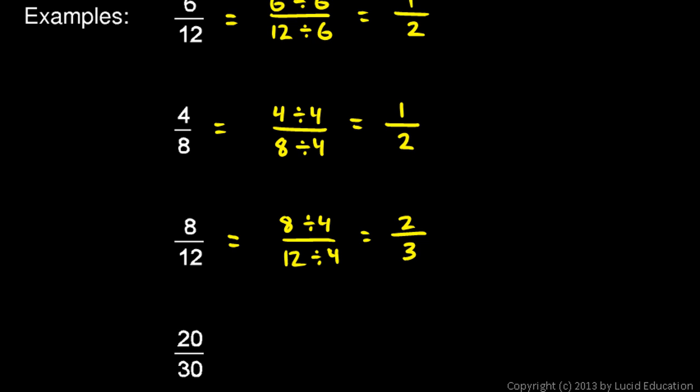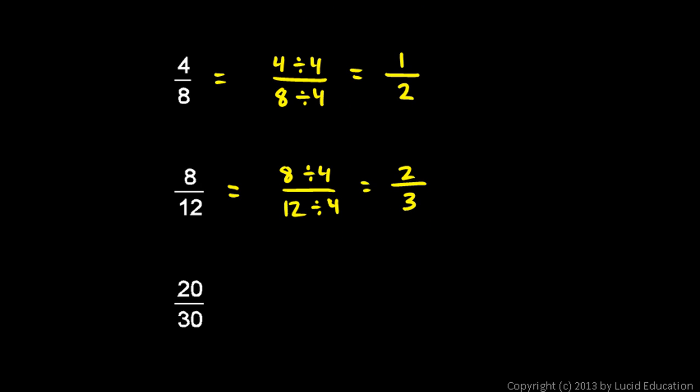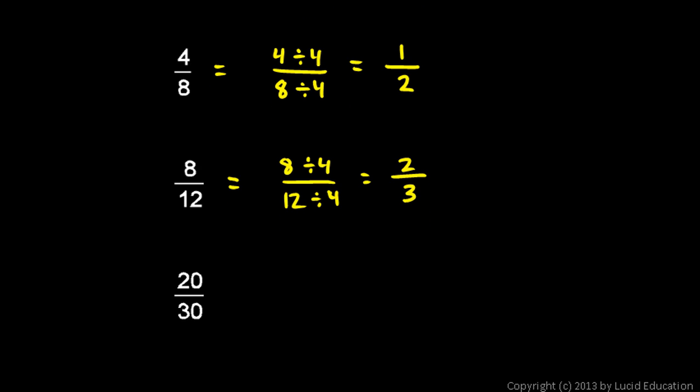One more example here: 20 over 30. What stands out is the 0—20 ends in a 0, and 30 ends in a 0. Both of those numbers are divisible by 10. So let's do 20 divided by 10 and 30 divided by 10.